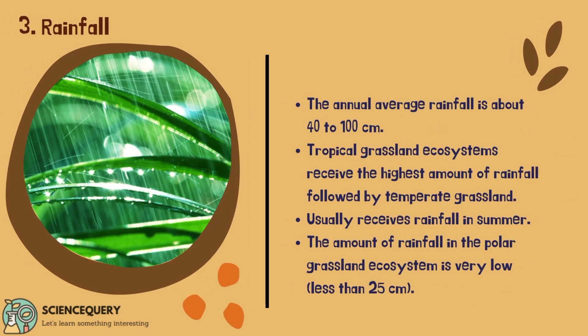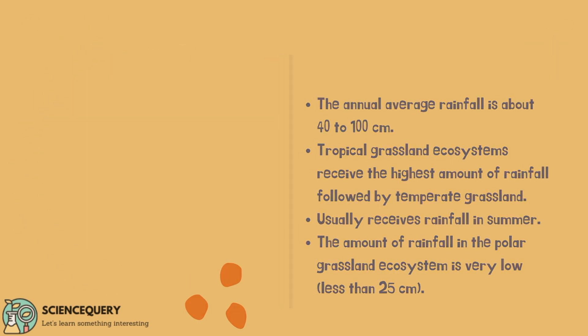The third abiotic factor or component of the grassland ecosystem is rainfall. The annual average rainfall is about 40 to 100 cm. Tropical grassland ecosystems receive the highest amount of rainfall, followed by the temperate grasslands, which usually receive rainfall in the summer. The amount of rainfall in the polar grassland ecosystem is very low, less than 25 cm.